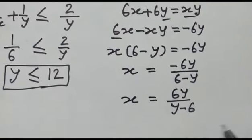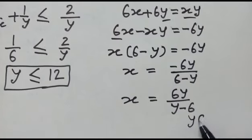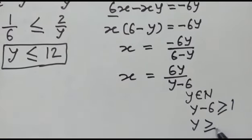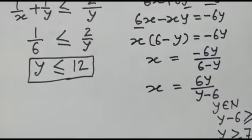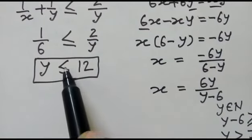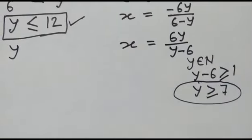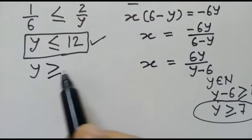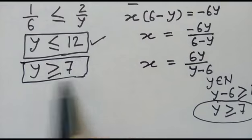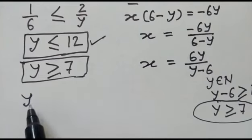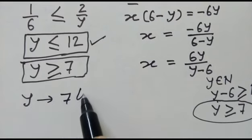Since y belongs to positive integers and x must be positive, y minus 6 must be greater than or equal to 1, so y is greater than or equal to 7. Combined with y less than or equal to 12, the value of y will vary from 7 to 12.